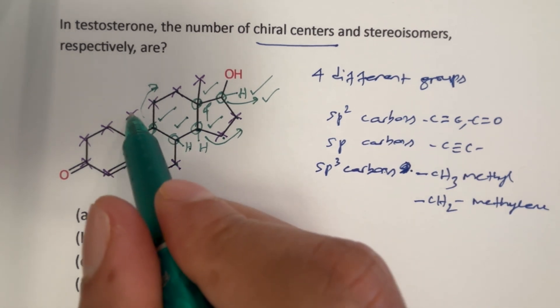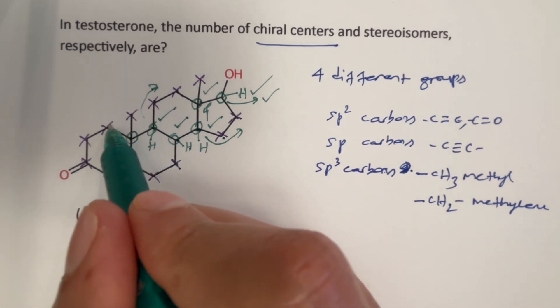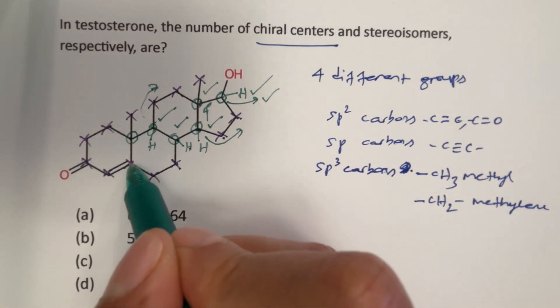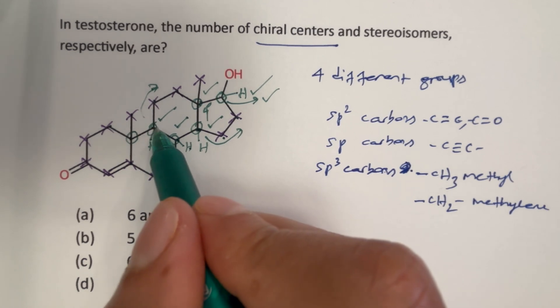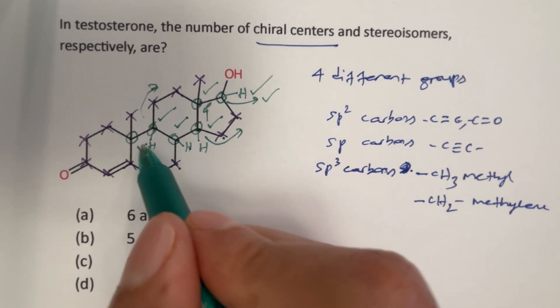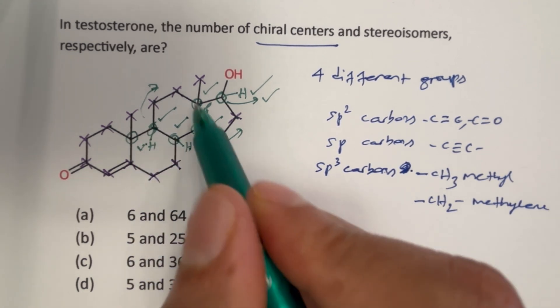And then this one also: methyl group, CH2, sp2 carbon and then CH, therefore this is also chiral. So 1, 2, 3, 4, 5, 6, so 6 carbon atoms that are chiral.